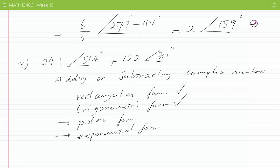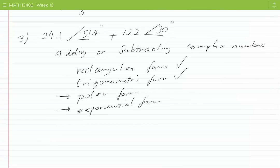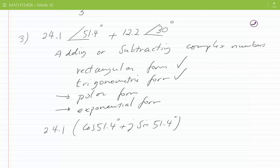Note that adding two complex numbers is the same as adding two vectors. We know complex numbers can be associated with vectors, and adding vectors can be done using the component method or the sine and cosine laws. Adding complex numbers is as sophisticated as adding vectors. Now we convert these two numbers into their trigonometric representation: 24.1 at 51.4 degrees becomes 24.1 cos(51.4°) plus j sin(51.4°), and we add 12.2 at 30 degrees.